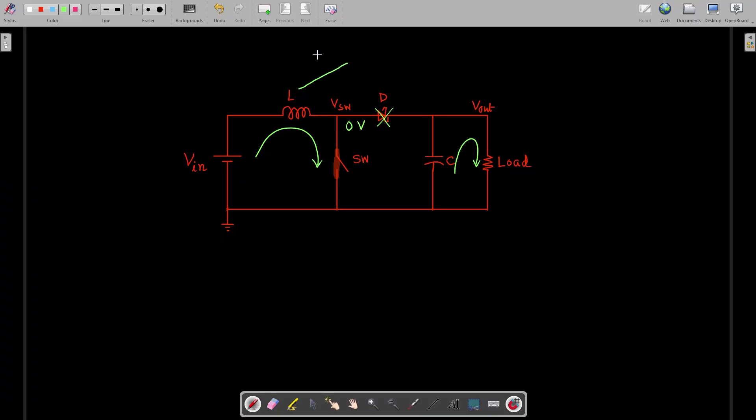As time goes on, the current through the inductor rises with constant slope of vin by L. Now as soon as the switch is turned off...